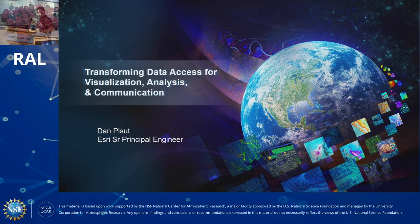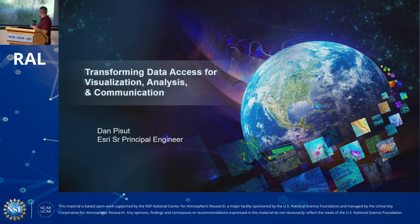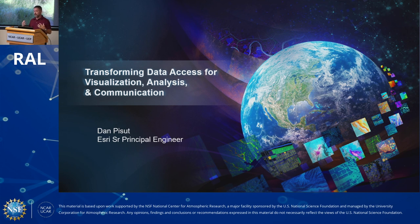Thank you, Jen, and thank you everyone here. As Jen mentioned, I wanted to talk about ways we're trying to improve how people access data and information — two very different things. Data is more raw, used for analysis, while information is the derivative products from that analysis or subsetting of larger datasets. It's great to give this presentation at NCAR, who have transformed the ways weather, climate, and atmospheric information have been distributed and accessed.